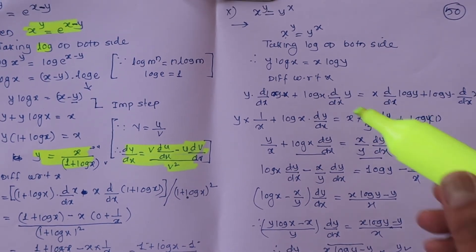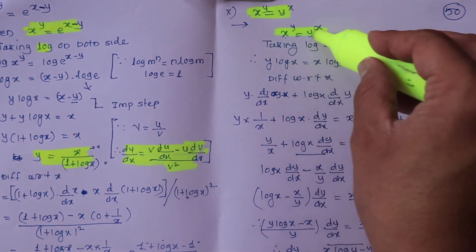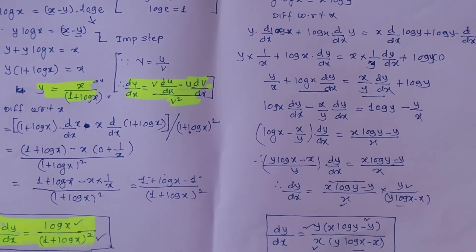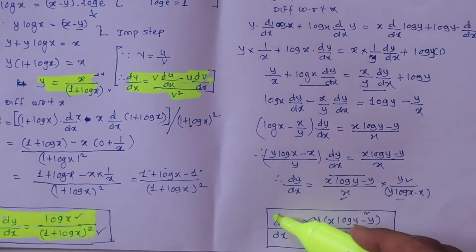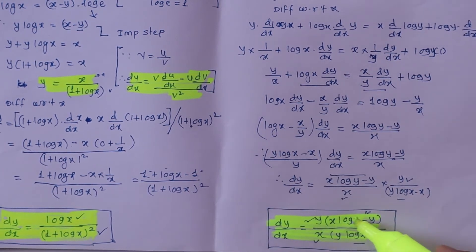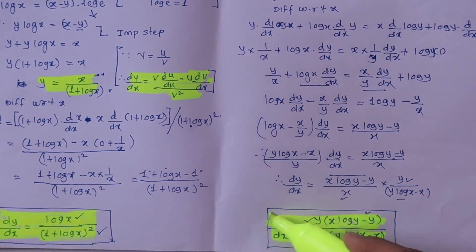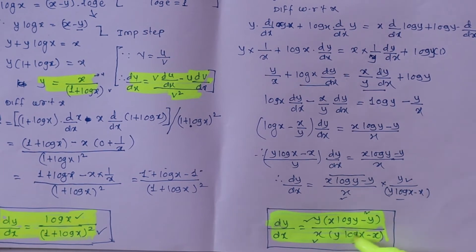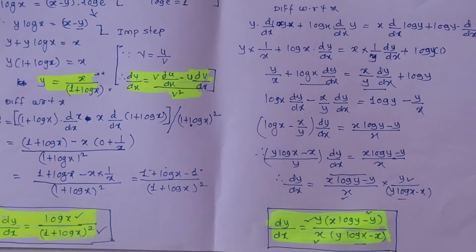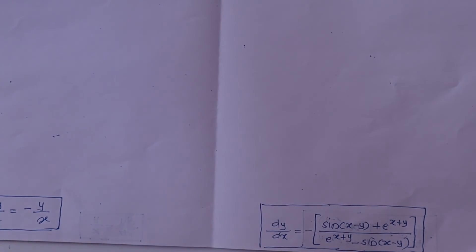Now the last term: y goes there, x is here. In this way we find the derivative of the interesting function x raised to y equals y raised to x. Thus we solve up to ten examples on implicit functions. This is the answer — we are giving natural time, not making any hurry.